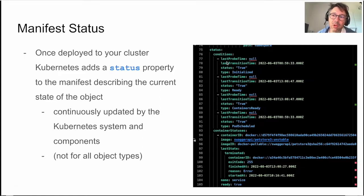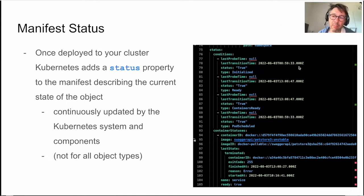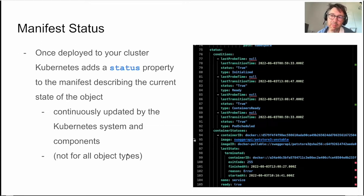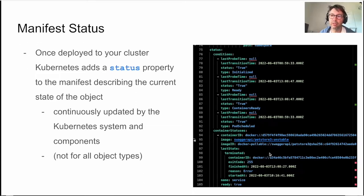One thing Kubernetes adds to your manifests once you've deployed them is a status section, at the end of the YAML file. The status tells you the current actual state of the object. This will vary depending on the type of object and its lifecycle. The status is not something you add yourself — when you deploy your manifest and look at it running in the cluster, you'll see information on its status. It's always added by Kubernetes itself.